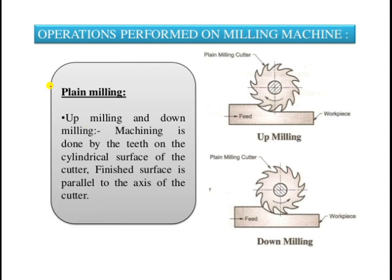The first operation is plane milling. Plane milling is nothing but the up milling and down milling process, where machining is done by the teeth on the cylindrical surface of the cutter. The milling cutter is a multi-point circular disc having cutting points on it, which are responsible for removal of material from the work piece. The finished surface is parallel to the axis of the cutter.